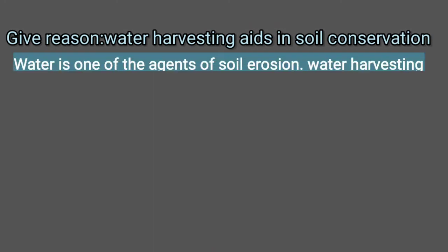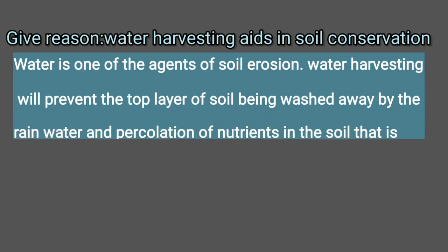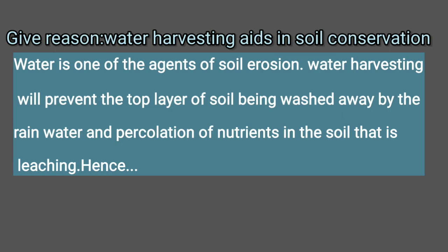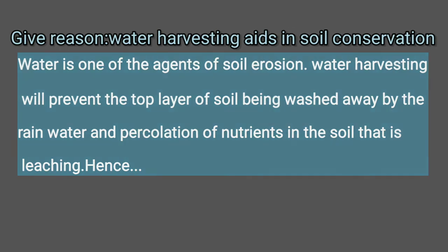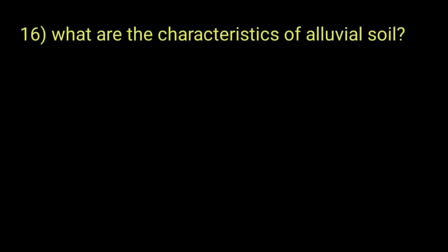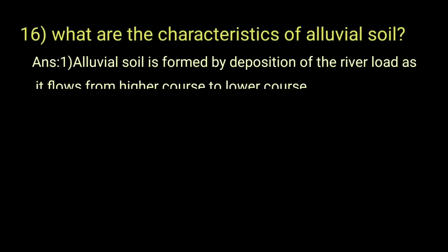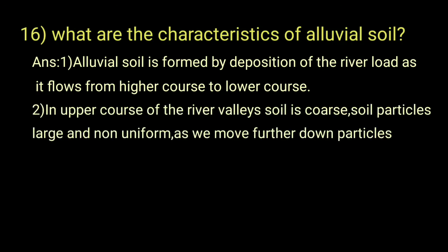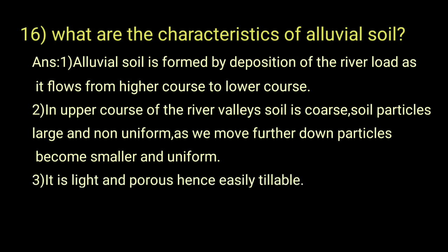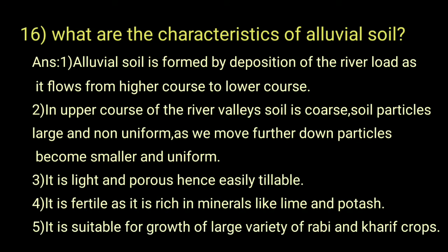Give reason: Water harvesting aids in soil conservation. Water is one of the agents of soil erosion. Water harvesting will prevent the top layer of soil from being washed away by rainwater and prevent leaching of nutrients. Hence, water harvesting helps in soil conservation. What are the characteristics of alluvial soil? It is formed by deposition of river load from higher to lower course. In the upper course, soil is coarse with large, non-uniform particles; further down, particles become smaller and uniform. It is light, porous, and easily tillable, fertile due to minerals like lime and potash, and suitable for a large variety of Rabi and Kharif crops.